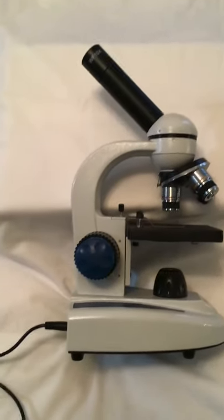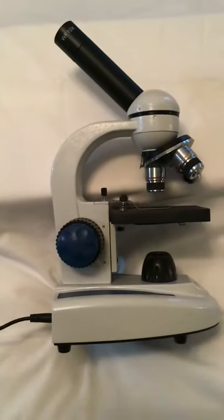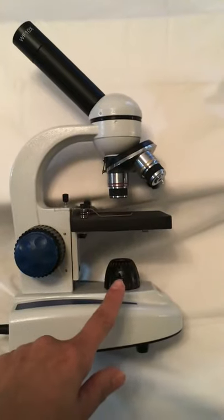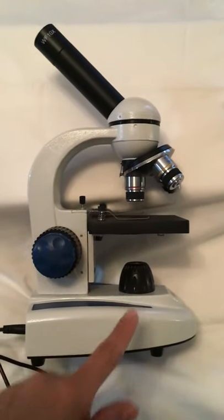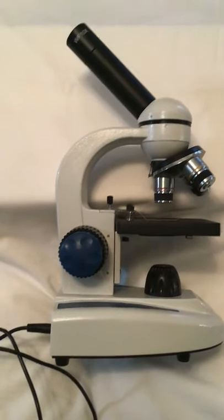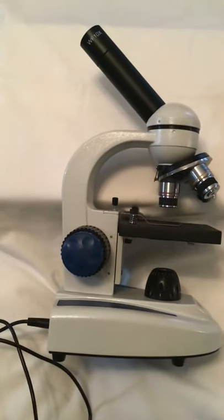This is a pretty basic model. It is electrical. There are some microscopes that have a mirror as their light source, but this one actually has a lamp. So we're going to go from top to bottom and work our way down to setting up a slide for viewing.